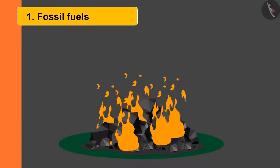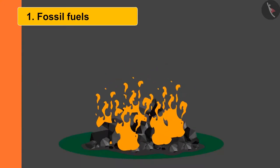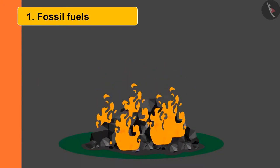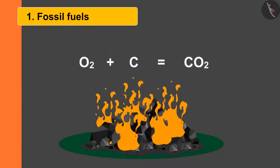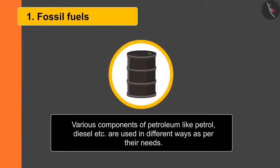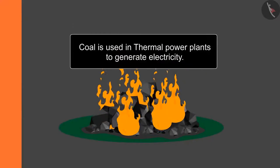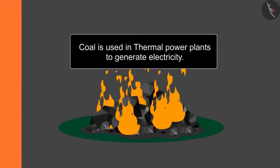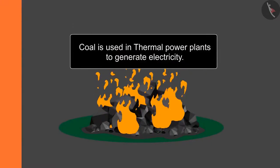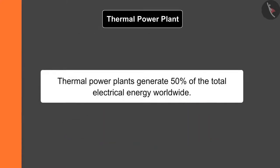Coal is the largest source of carbon. Coal when burns in air reacts with oxygen present in the air to form carbon dioxide. Various components of petroleum like petrol, diesel, etc. are used in different ways as per their needs. This coal is used in thermal power plants to generate electricity.